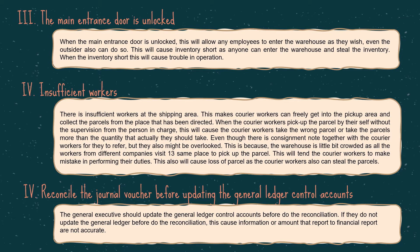The fourth weakness is insufficient workers at the shipping area. This allows courier workers to freely enter the pickup area and collect parcels without proper supervision. When courier workers pick up parcels by themselves without supervision from the person in charge, this may cause them to take the wrong parcel or take more parcels than the quantity they should.